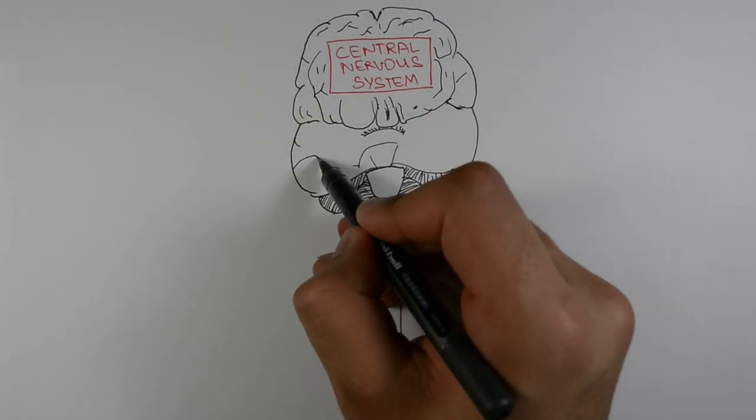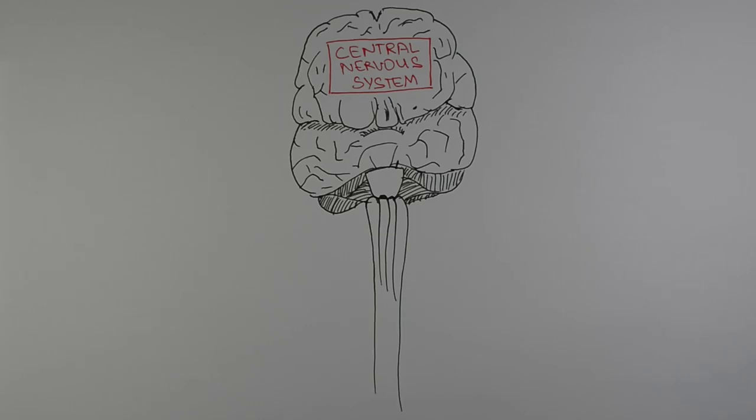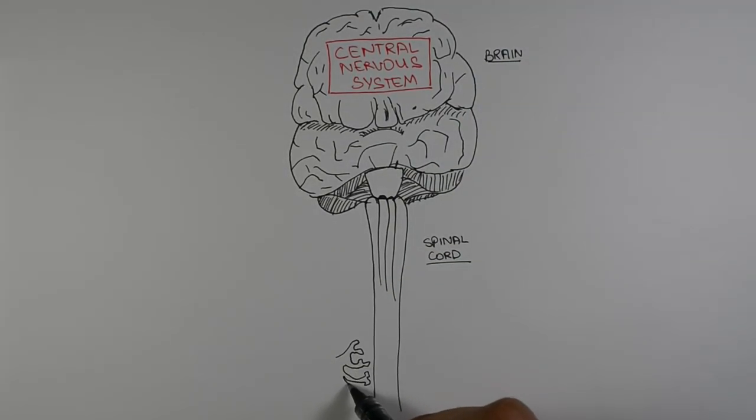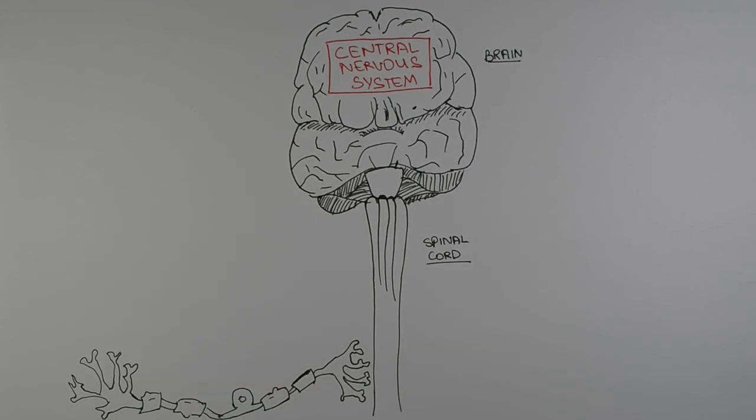The central nervous system includes brain and spinal cord and this is where all of the information that enters our body is processed. We gather this information from the environment through our sensory neurons which carry the signal to the brain.